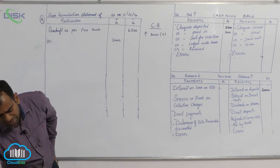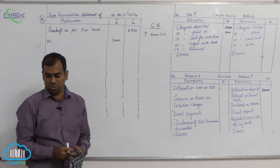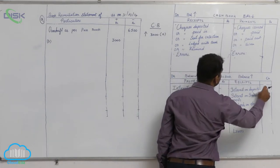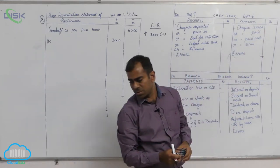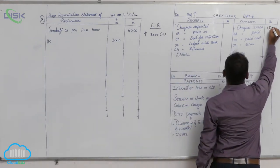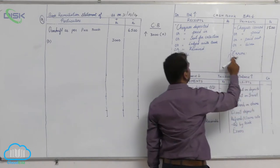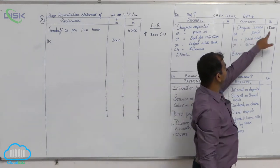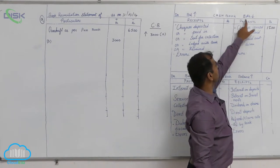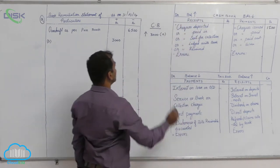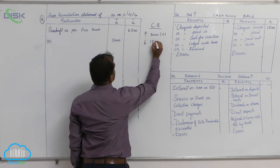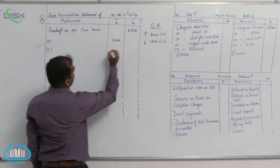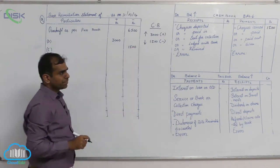Transaction C: checks issued but not presented for payment — 1,500. Checks issued appear on the payment side of the cashbook. Since these people did not collect the money from the bank, there is no entry in the passbook. When you enter on the payment side of the cashbook, the cashbook balance comes down by 1,500. So enter 1,500 in the minus column.